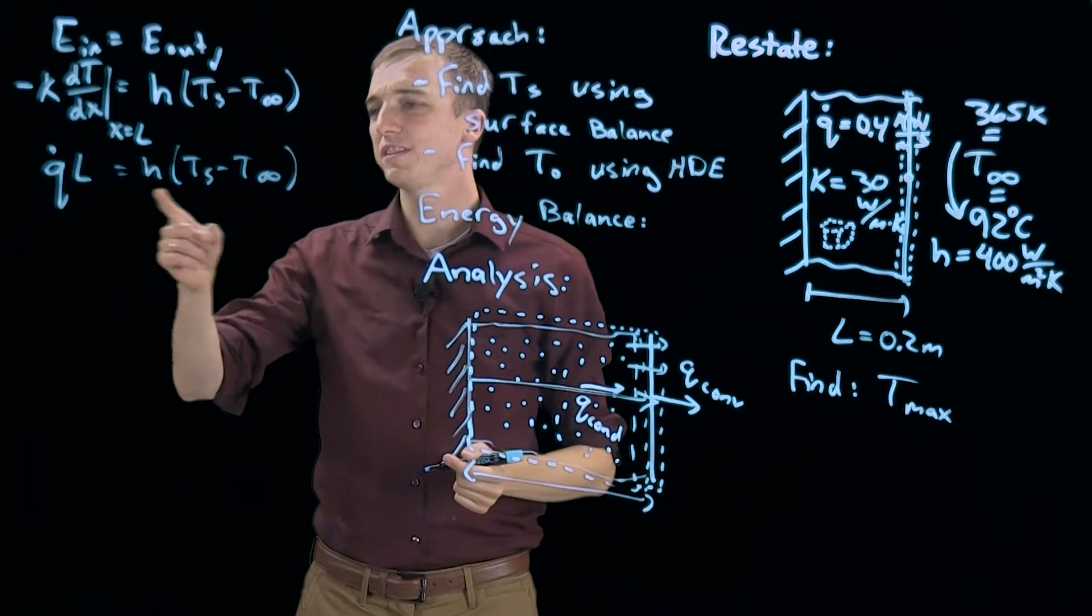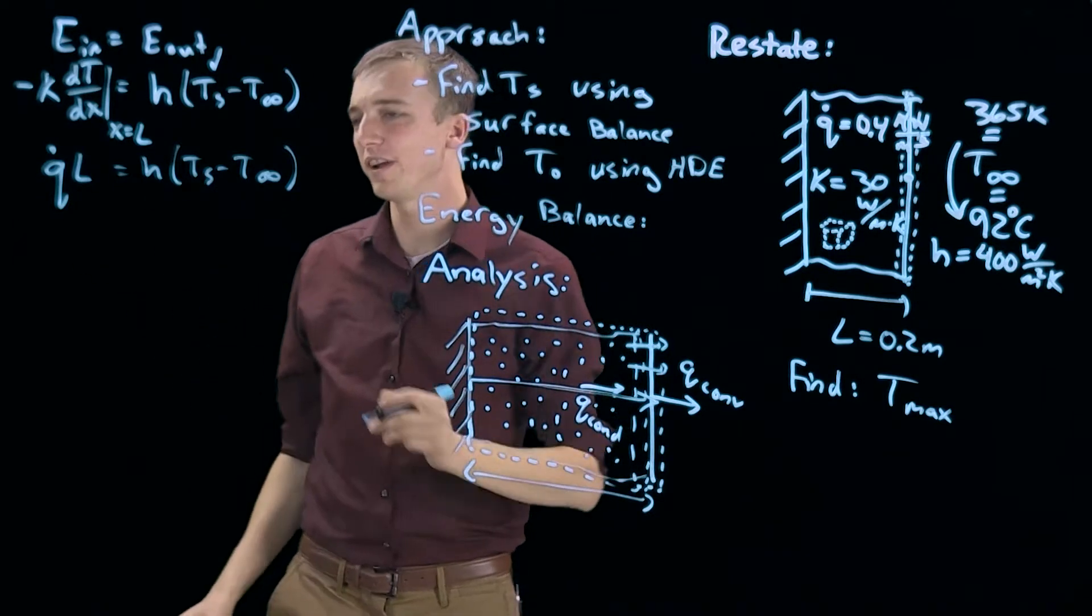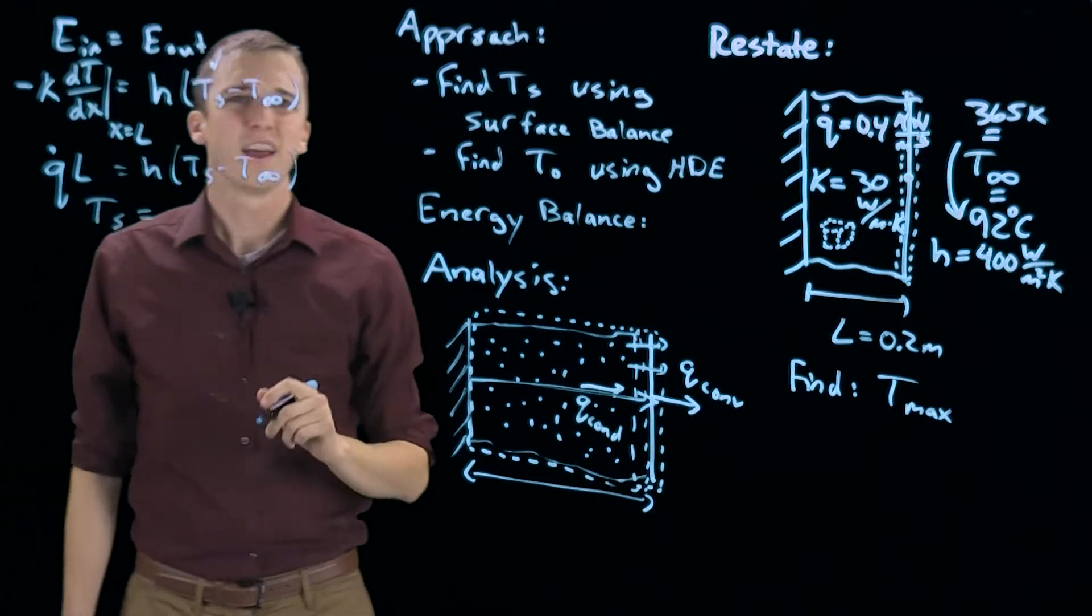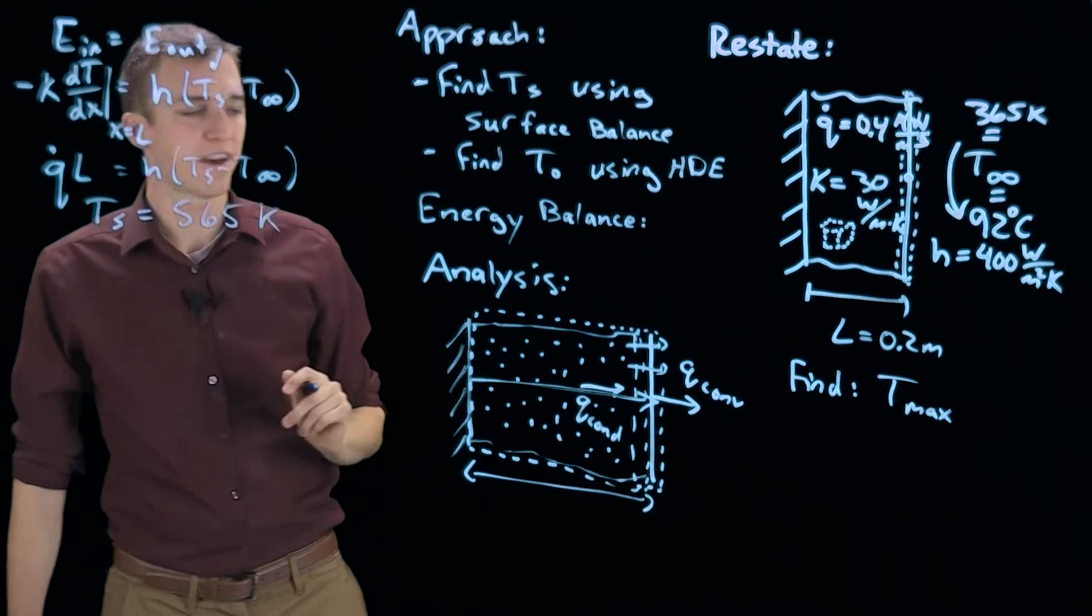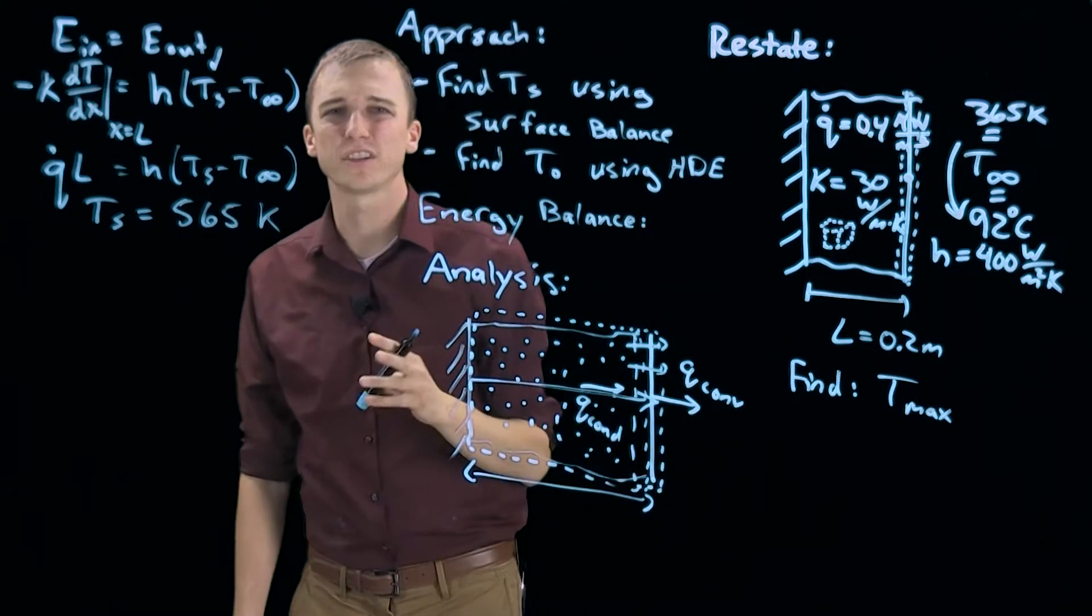We know all of these terms except for Ts, so rearranging we can solve for Ts. And when we do that we find it is 565 Kelvin. That is the temperature of our surface.